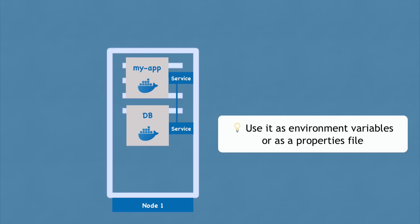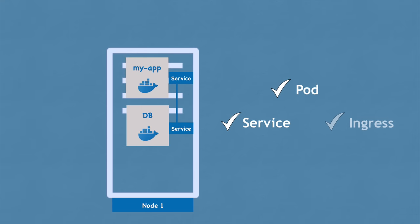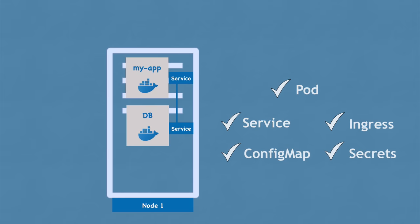To review, we've looked at almost all the most commonly used Kubernetes basic components. We've looked at the pod, how services are used, what the ingress component is useful for, and we've also seen external configuration using ConfigMap and secrets.